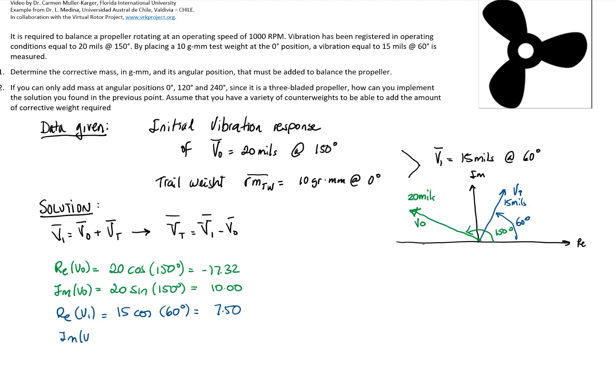And the imaginary part, which is 15 sine of 60 degrees, is 12.99. Then the real part of the response to the trail weight will be 24.82, and the imaginary part will be 2.99.